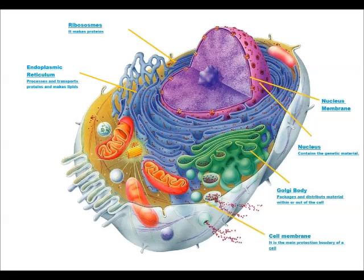After the ribosomes come the endoplasmic reticulum. They are two types: the rough endoplasmic reticulum and the smooth endoplasmic reticulum. The rough endoplasmic reticulum contains ribosomes. The endoplasmic reticulum processes and transports proteins and makes lipids.